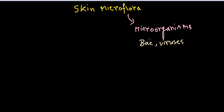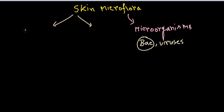Among bacteria and viruses, the most common are bacteria. The typical types of bacteria found on skin are of two major types: gram positive cocci and gram positive bacilli.